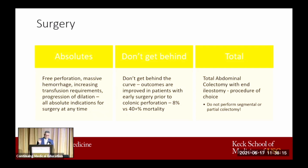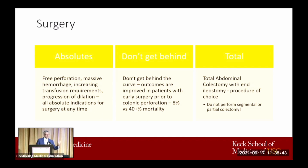The key point is making the decision to go to surgery. Clearly, if you have a perforation, you need to be in the operating room — there's no question. There are some absolutes: perforation, massive hemorrhage, increasing transfusion requirements, and progression of the distension are absolute indications at any time. The challenge is that oftentimes they don't come in with a perforation and you have to decide when to go to surgery. If you're getting a worsening clinical situation — whether in vitals, labs, or imaging — you need to be in the operating room. Don't get behind, because once you get behind, you're in trouble. Your outcomes are improved if you're in the operating room before the colonic perforation happens. Once perforation occurs, outcomes become much worse.